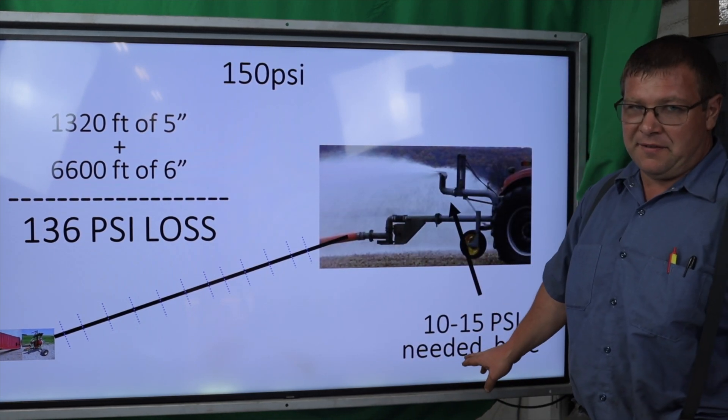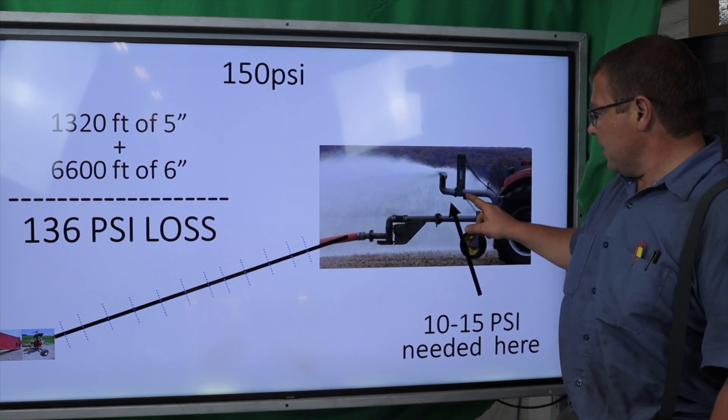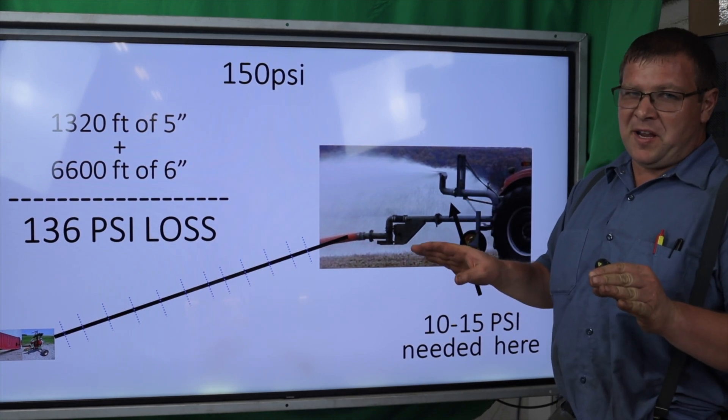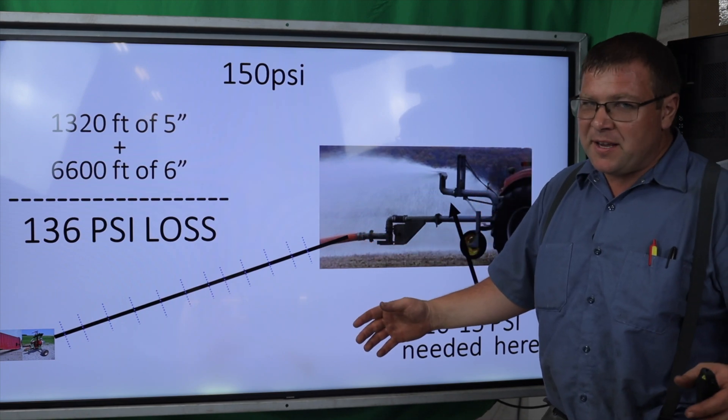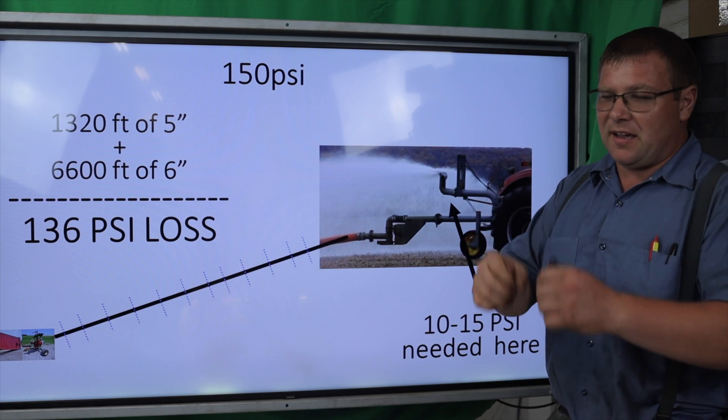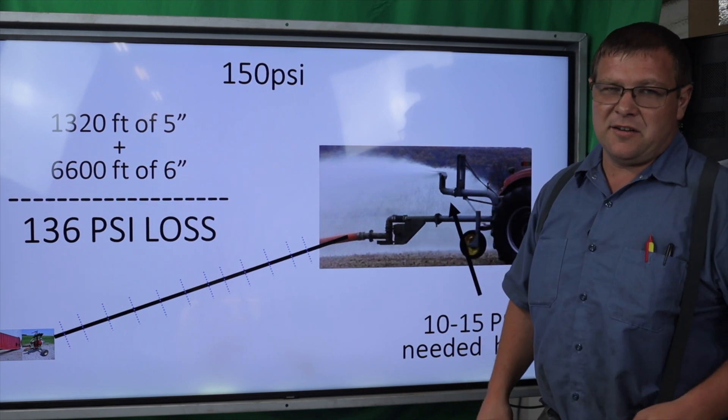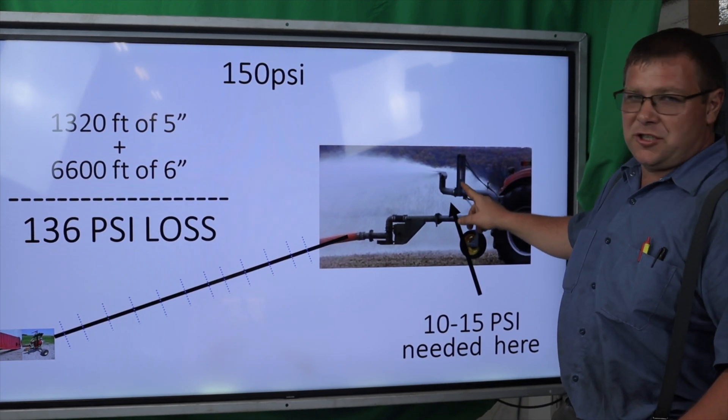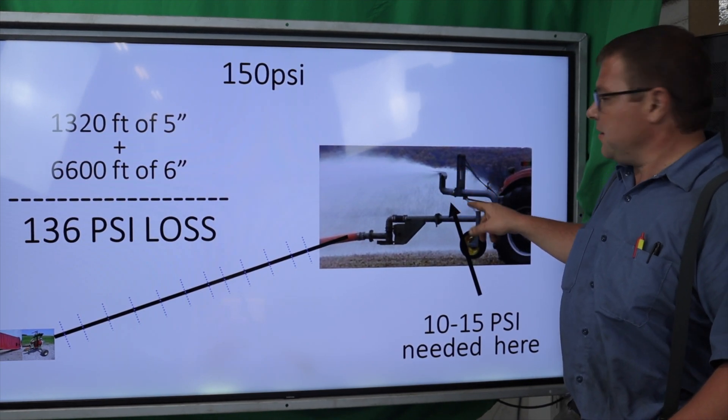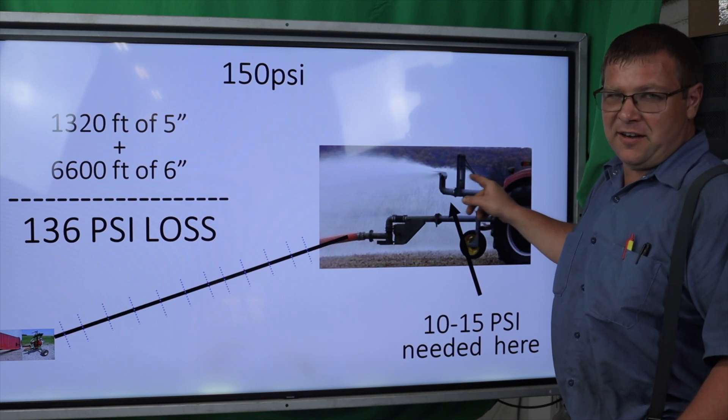We also need 10 to 15 PSI at the end. One reason is it gives you a better spread pattern. The real reason is the hose - you need 10 PSI to keep it from kinking. If you see it kinking, you're wearing your hose out. Watch your pressure gauge. If it's only at 2 or 3 PSI, close this valve partway until you get 10 PSI.